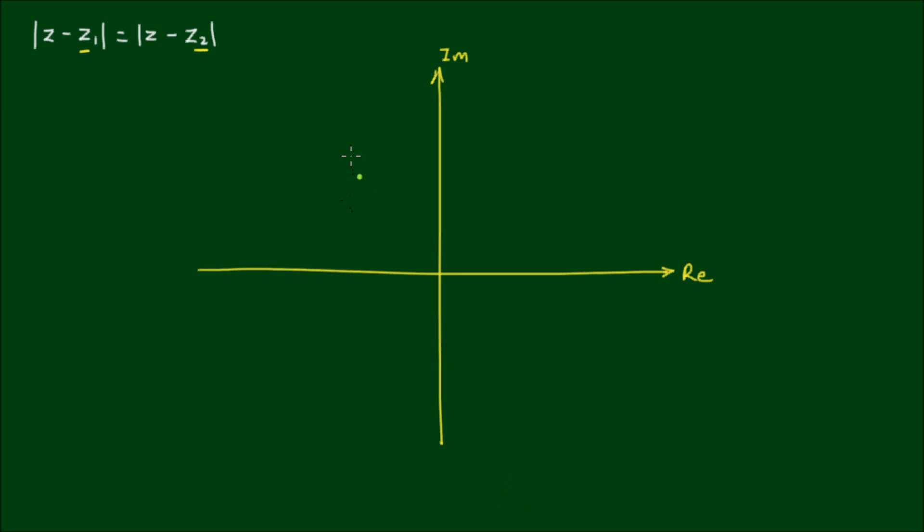So let's say that the fixed point z₁ is located here, and my variable point z is arbitrarily located here. Then the vector representation of z₁ is a vector that goes from the origin to the coordinates of z₁. My apologies, this is z, not z₁. So the vector representation of z is a vector from the origin to the coordinates of z.